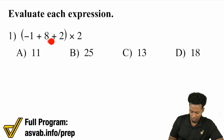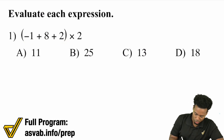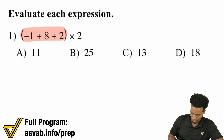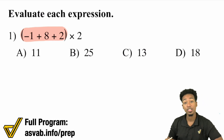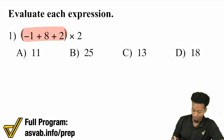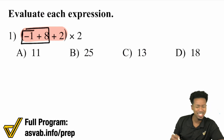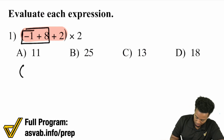Negative one plus eight plus two, all times two. This parentheses is what I'm going to take care of first, so that after that I'll multiply whatever I get by two. Negative one plus eight — remember, that's the same thing as saying eight minus one.